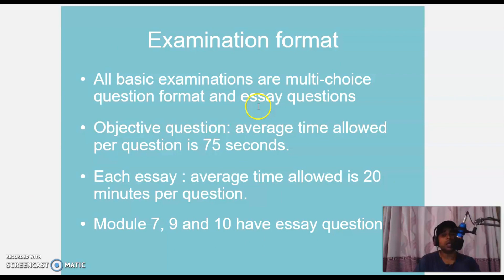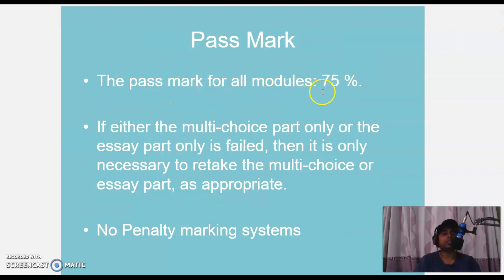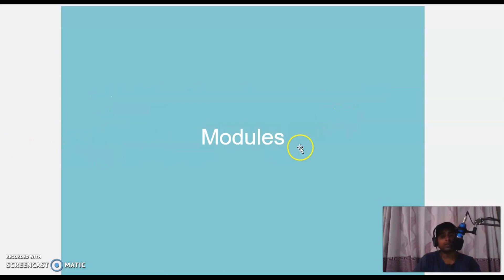This is the examination format. All basic examinations are multi-choice questions and essay questions format. Average time allowed per question is 75 seconds, and each essay average time allowed is 20 minutes. Modules 7, 9, and 10 have essay questions. The pass mark for all modules is 75% — if you get 74% you will fail. If either the multi-choice part only or the essay part only fails, it is only necessary to retake that part. A failed module can be retaken after 90 days following the date of the failed module examination.